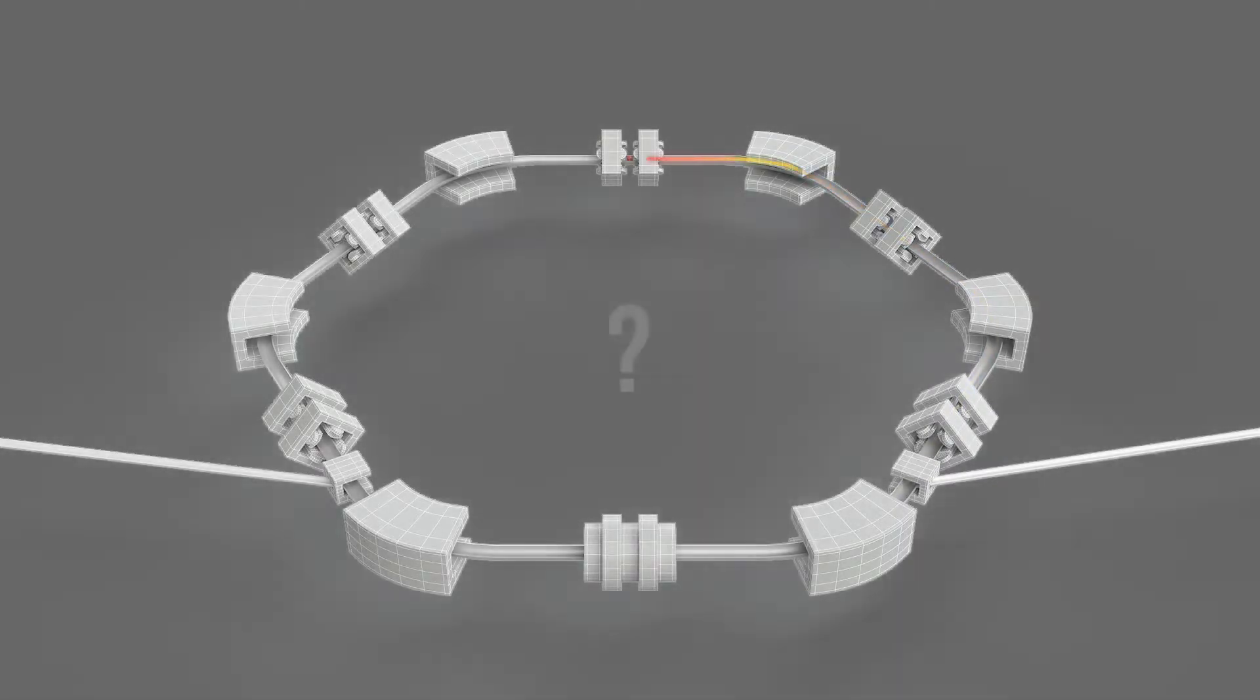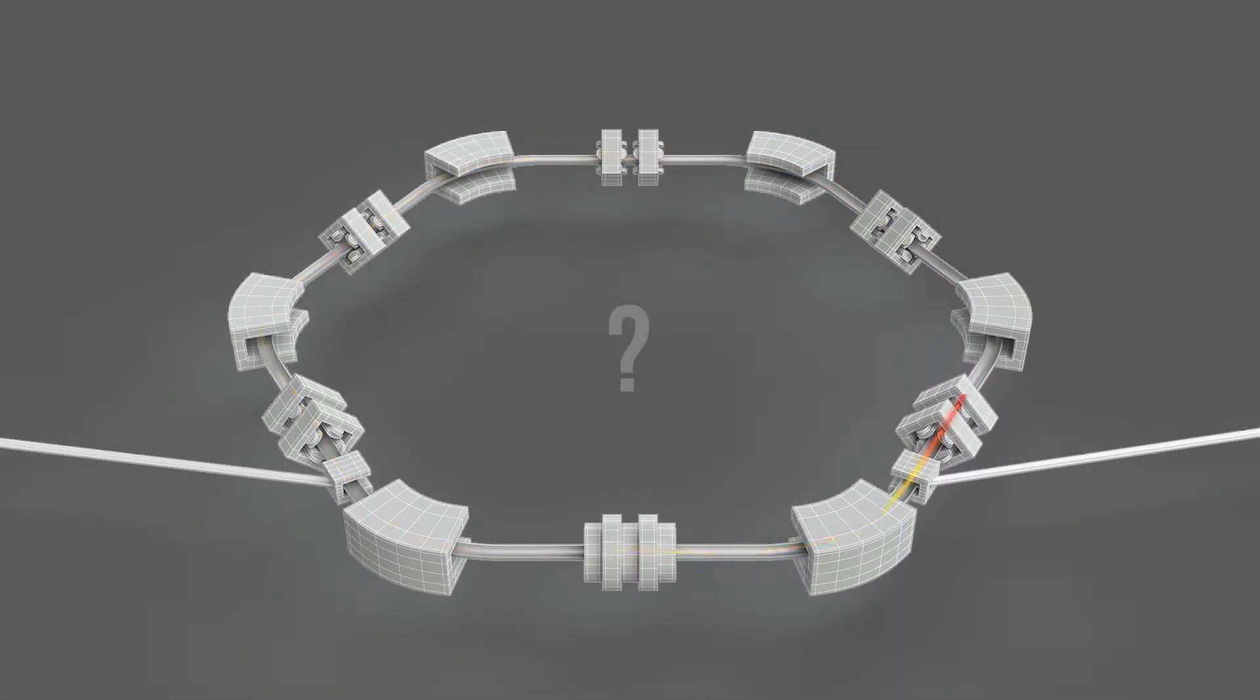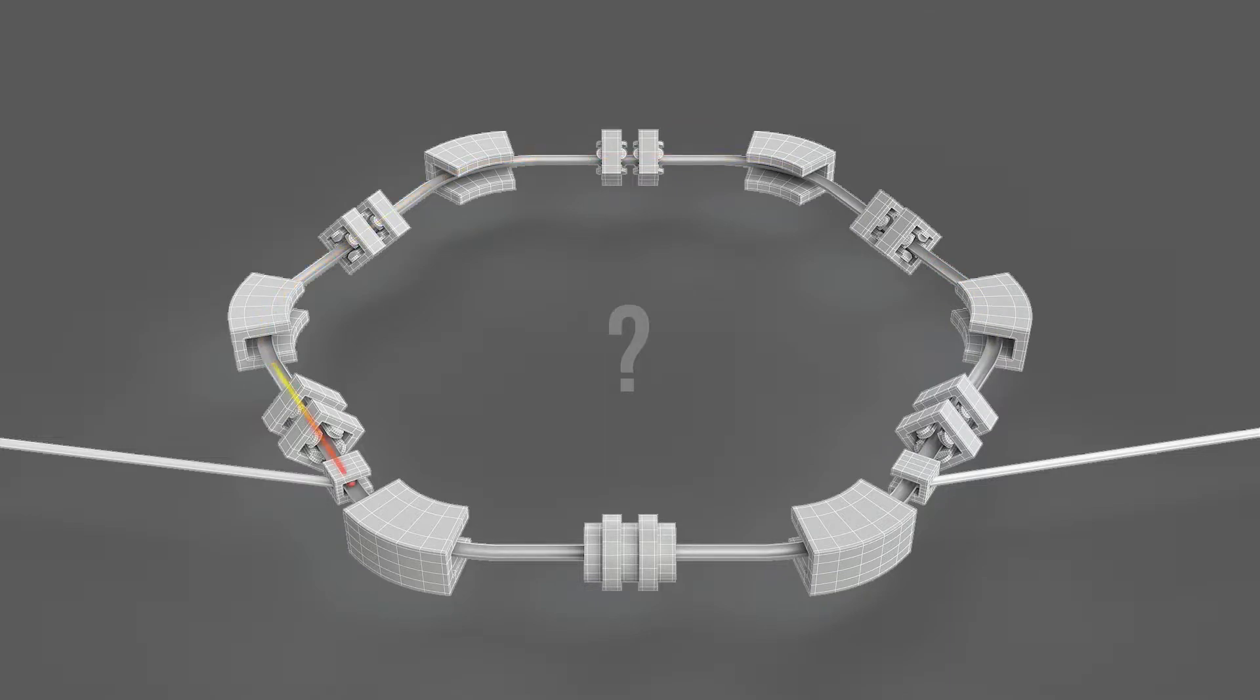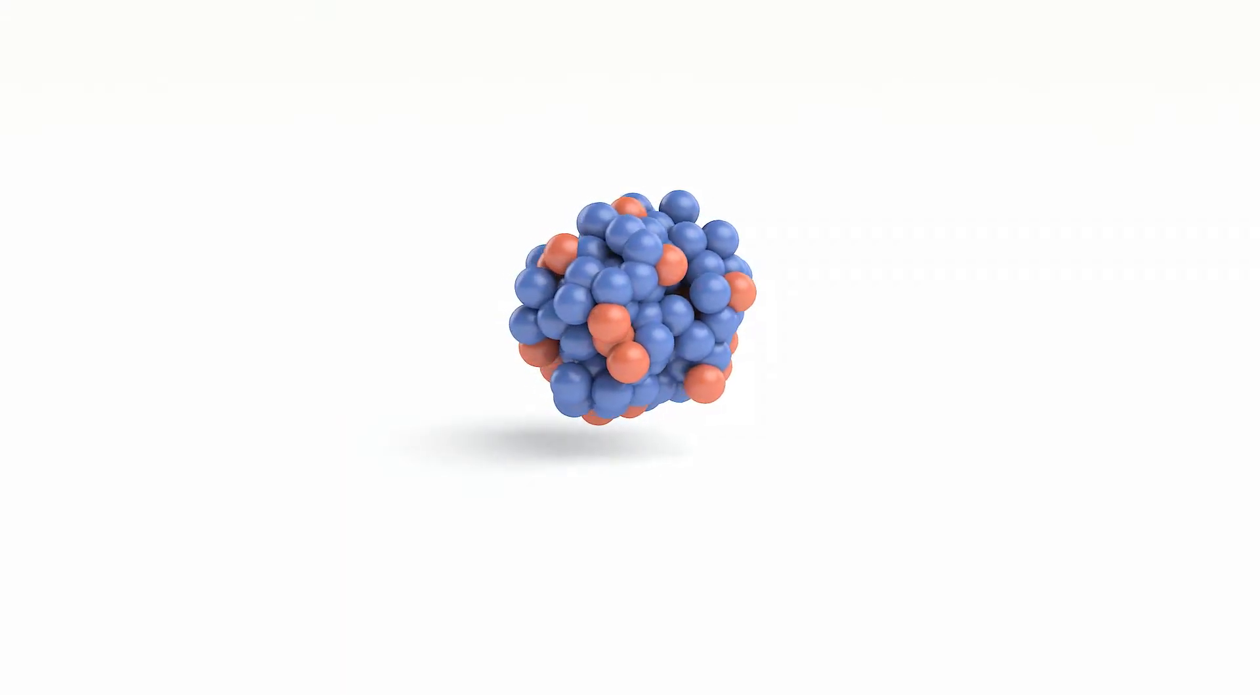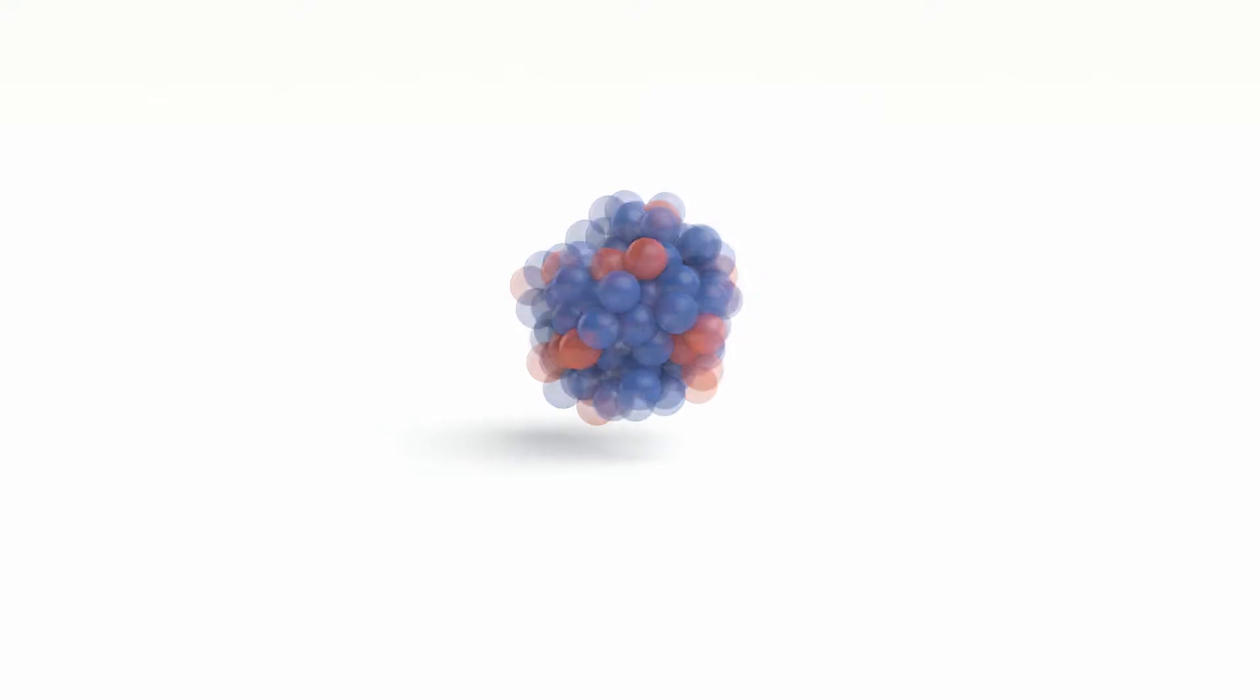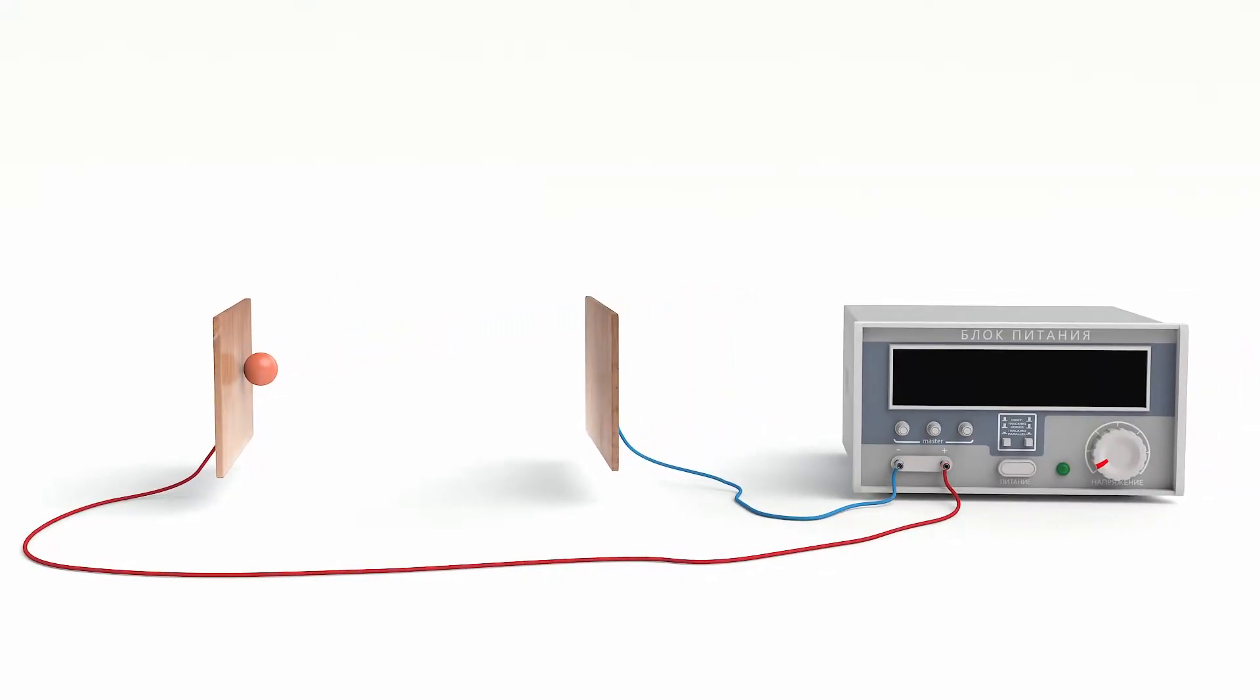Let us spend a few minutes dwelling upon how accelerators and colliders work. Suppose that we want to increase the energy and velocity of a charged particle, for example, a proton. To do this, we place a proton between positively and negatively charged electrodes. When a proton with a charge of one volt passes through, its energy increases by one electron volt.